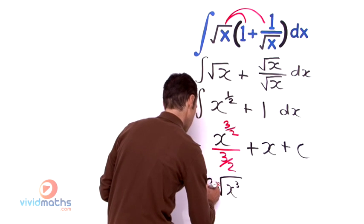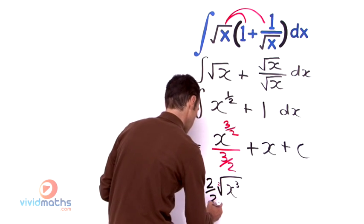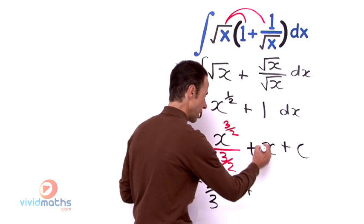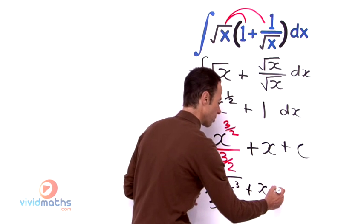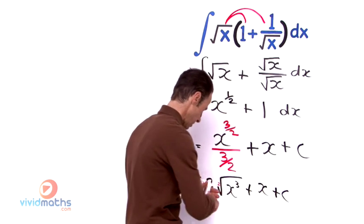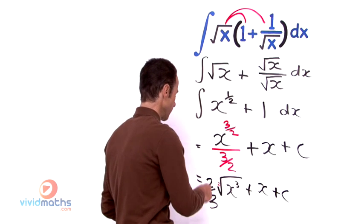So it is 2 over 3 and then we bring down the x and the constant. And that is our answer for that example.